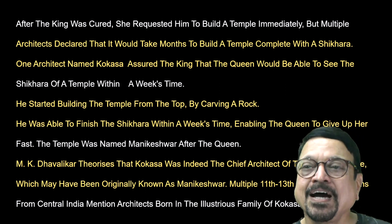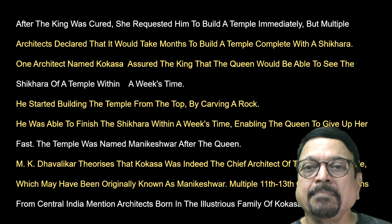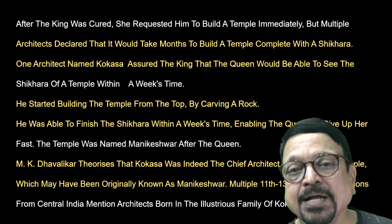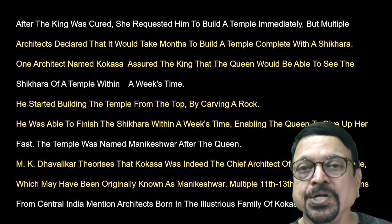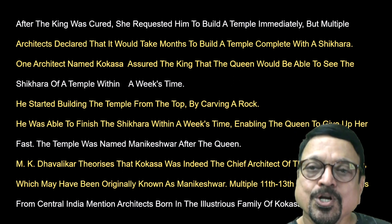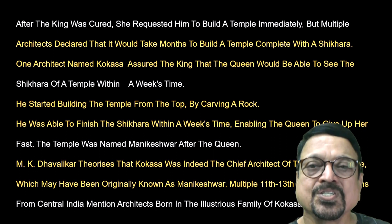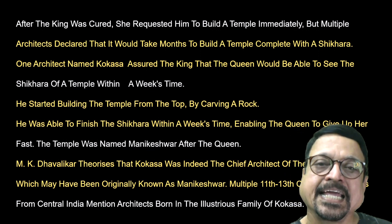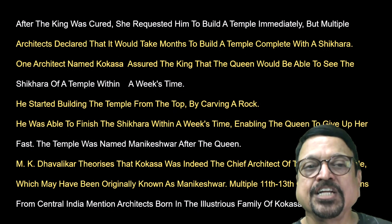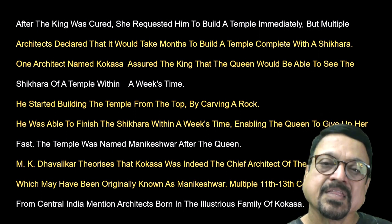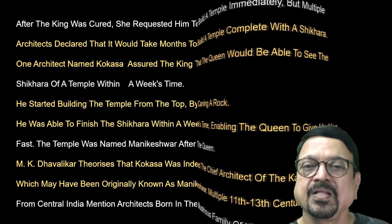The temple was named Manikeshwara — after the queen; Ishwara means Lord Shiva. M.K. Dhavikar postulates that Kokasa was indeed the chief architect of the Kailasa temple, which may have originally been known as Manikeshwara. Multiple 11th to 13th century inscriptions from Central India mention architects born around that time of the Kokasa lineage.